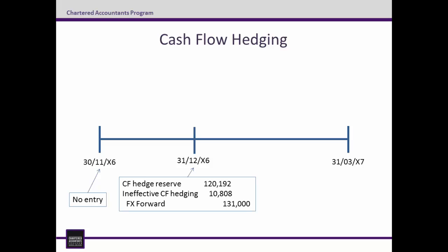This is recognised through a credit entry to the FX forward of $131,000. The second thing to do is to apply the lower of rule from IFRS 9, paragraph 6.5.11. This effectively partitions the change in value of the FX forward into the effective and ineffective portions of the hedge. The effective portion gets taken to OCI whilst the ineffective portion goes to profit or loss. The OCI component is the lower of, in absolute terms, the cumulative gain or loss on the hedging instrument (the FX forward) and the cumulative change in fair value of the hedged item (the firm commitment). The cumulative change in the FX forward is $131,000, whilst the cumulative change in the firm commitment is $120,192. As $120,192 is the lower amount, this is the effective portion and is debited to the cash flow hedge reserve, an OCI account, whilst the remainder $10,808 is debited to P&L as the ineffective component.